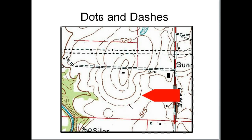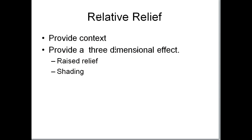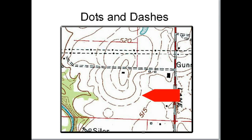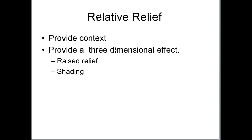Here's an example showing some supplemental contours. All of those methods show absolute relief — even though the contour lines are extrapolated, they give a number to work with. Now I'm going to switch to relative relief.